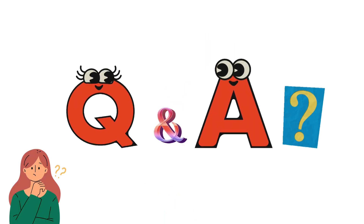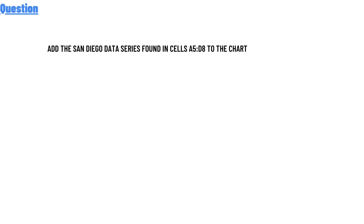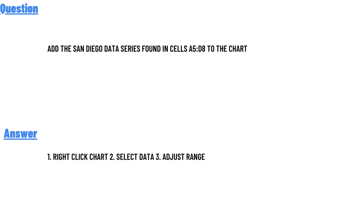Our today's question is: add the San Diego data series found in cells A5:D8 to the chart. The correct answer to the question is 1 — click charts to select data, 3 adjustments. So that's the answer to the question.